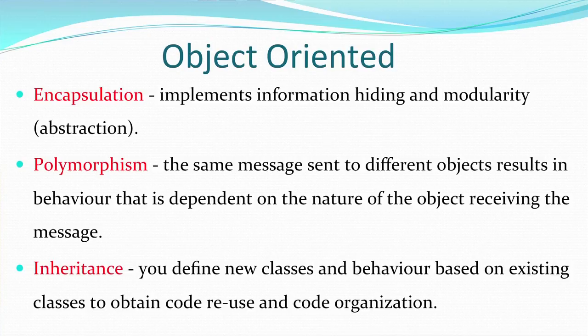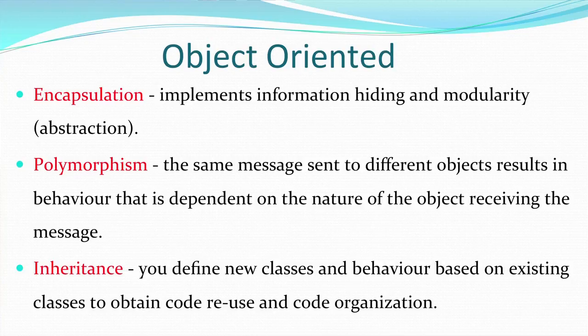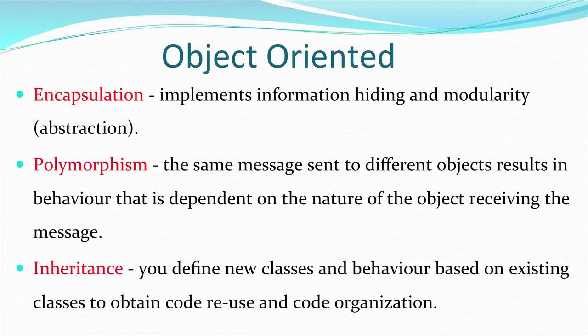Polymorphism means the same message is used again and again according to different requirements. The same message sent to different objects results in behaviour that is dependent on the nature of the receiving object — you get a different output depending on the object receiving the message and the arguments given along with it. Inheritance means a particular class uses the code of the class from which it is inherited, allowing you to define new classes based on existing ones for reusable code.